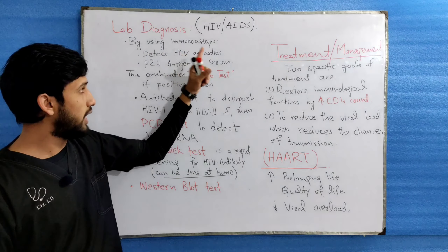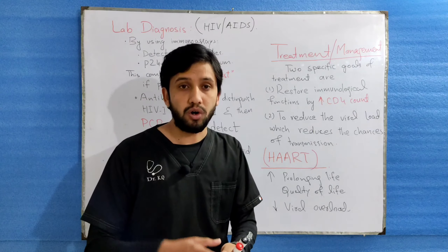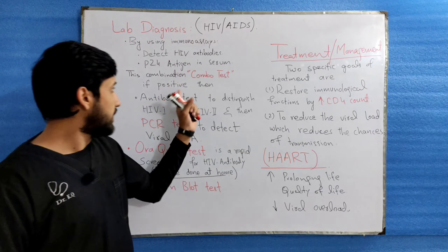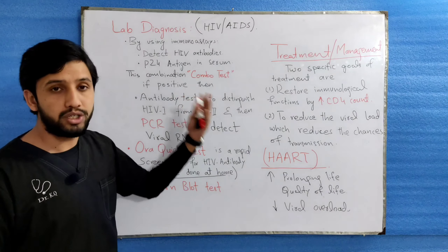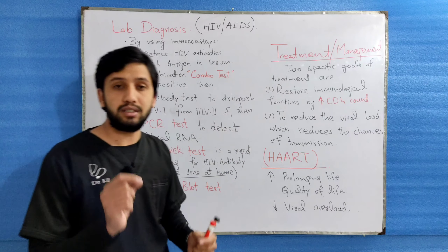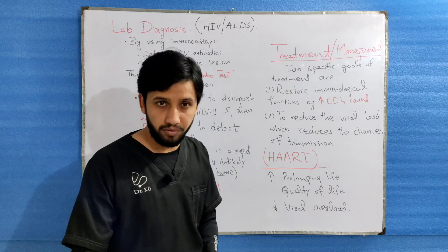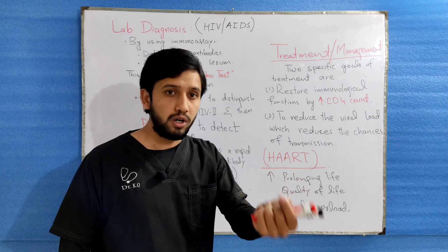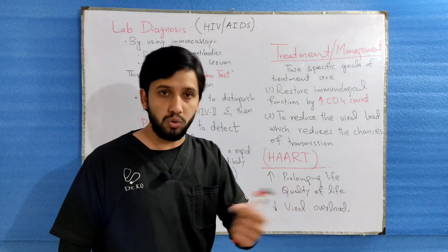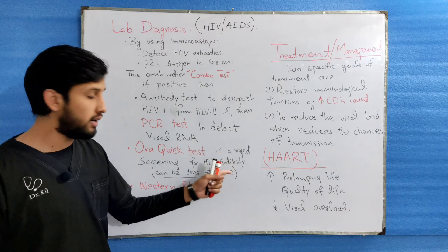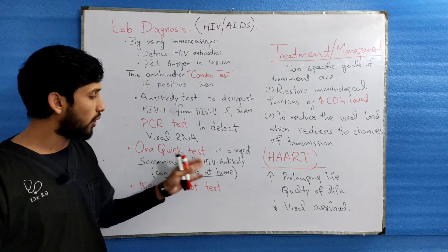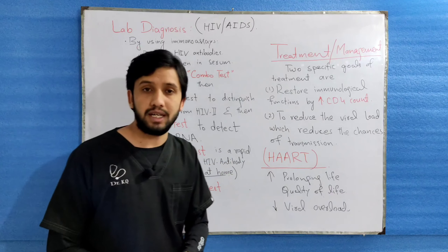The diagnosis of HIV 1 and HIV 2 can be made by using immunoassays which can detect either HIV antibody or P24 antigen in the serum. We call this the combo test. If positive, we will go for an antibody test to distinguish whether the infection is due to HIV 1 or HIV 2.